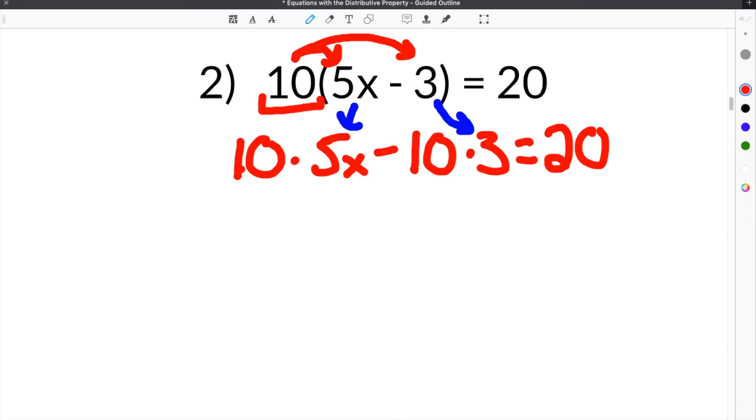Then you have to do the math. So we do 10 times 5x, which is 50x, of course, minus 10 times 3, which is 30. And then you bring down the 20 on this side.